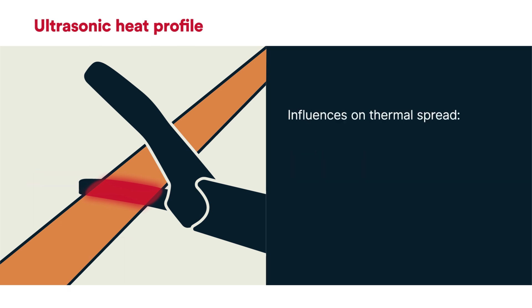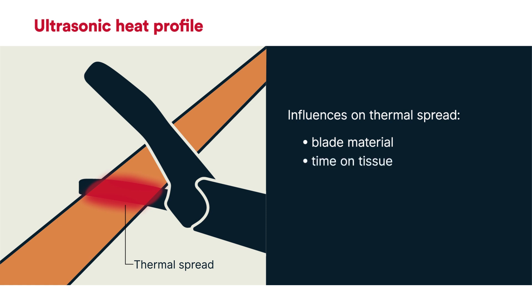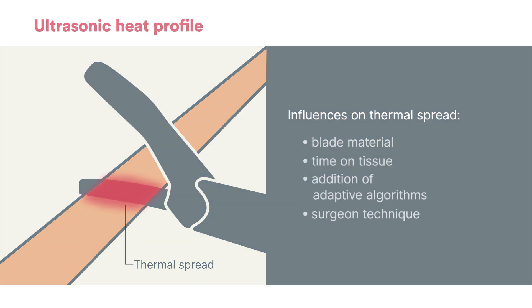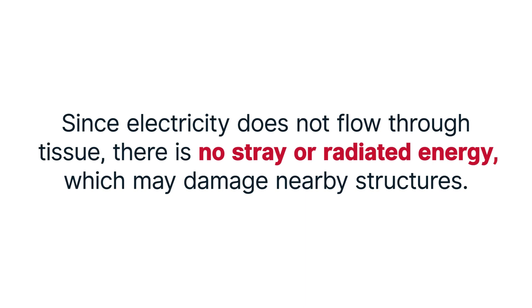Heat is generally contained within the jaws of the device, extending laterally by a few millimeters. The amount of lateral thermal spread is dependent on the blade material, time on tissue, addition of adaptive algorithms, and surgeon technique. Since electricity does not flow through tissue, there is no stray or radiated energy which may damage nearby structures. This is an electrical phenomenon of bipolar devices, which will be covered in Video 4 of this video series.